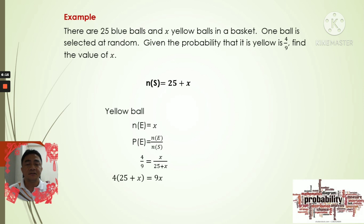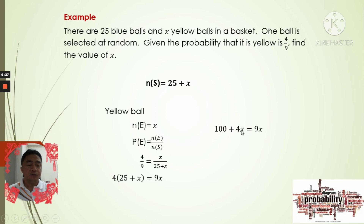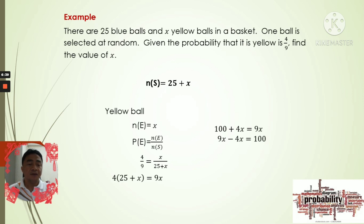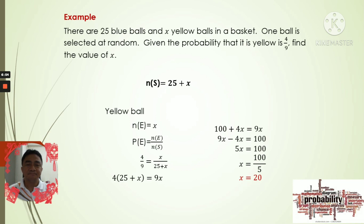Cross multiplying: 4 times (25 plus x) equals 9 times x. This gives 100 plus 4x equals 9x. Transposing 4x to the right: 100 equals 9x minus 4x, so 5x equals 100. Dividing by 5, x equals 20. Therefore, there are 20 yellow balls in the basket.